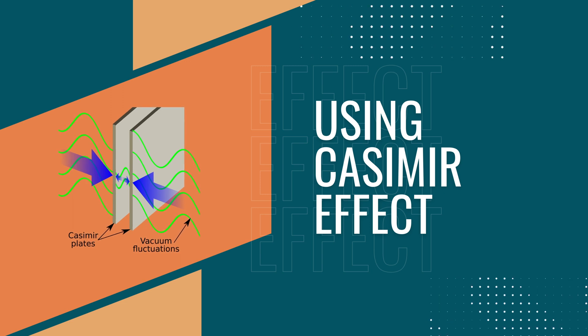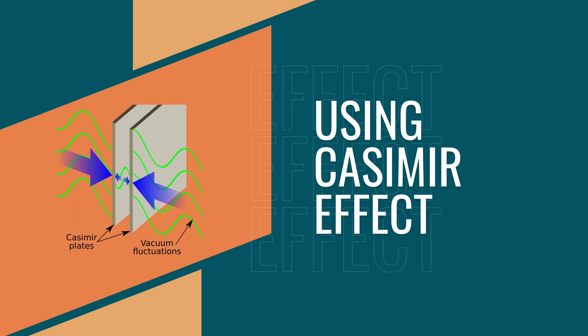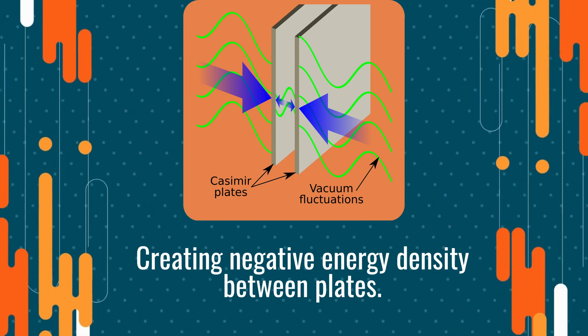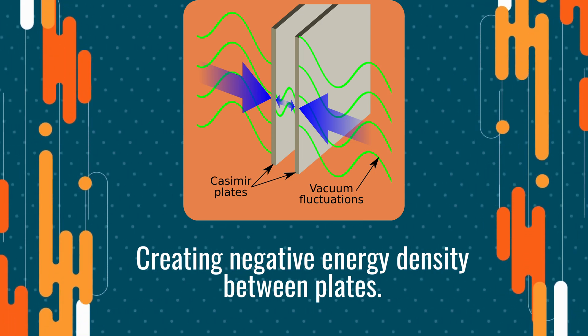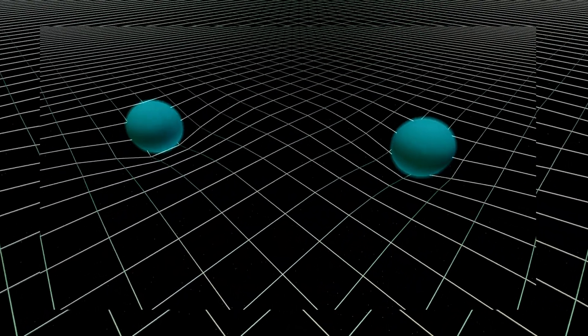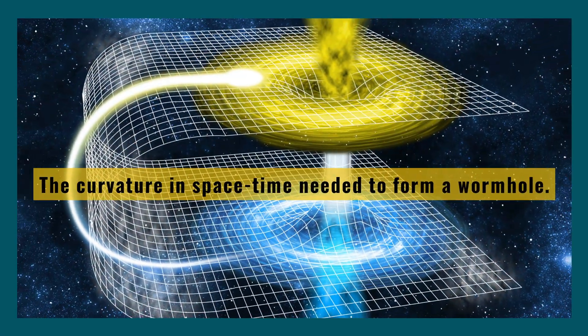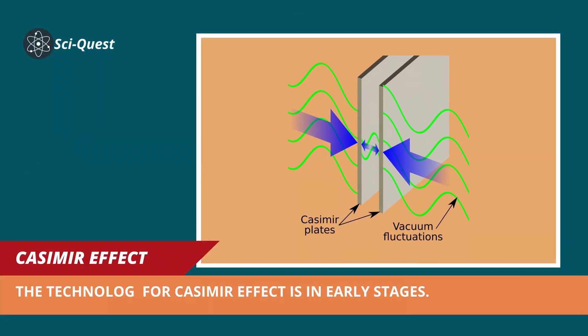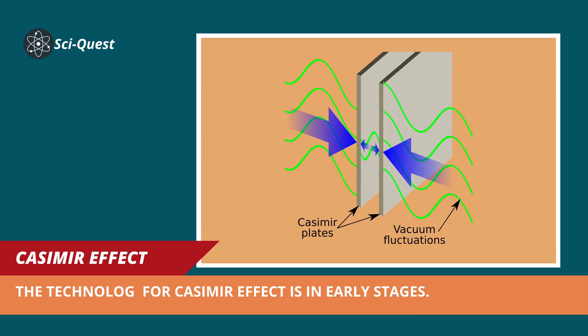The Casimir Effect is a phenomenon in quantum physics that involves the creation of a region of negative energy density between two plates. This effect could be used to create the curvature in space-time needed to form a wormhole. However, the technology to create and manipulate the Casimir Effect is still in its early stages.